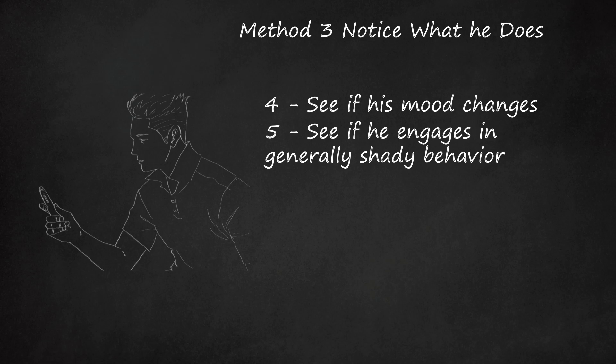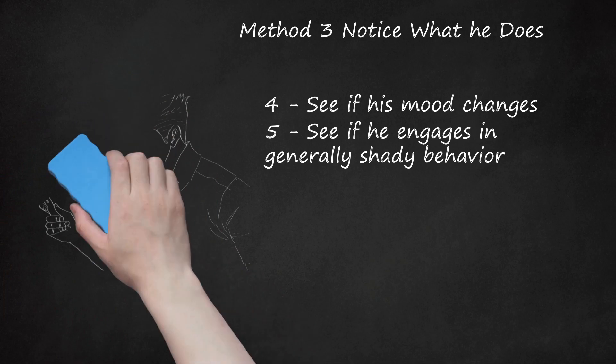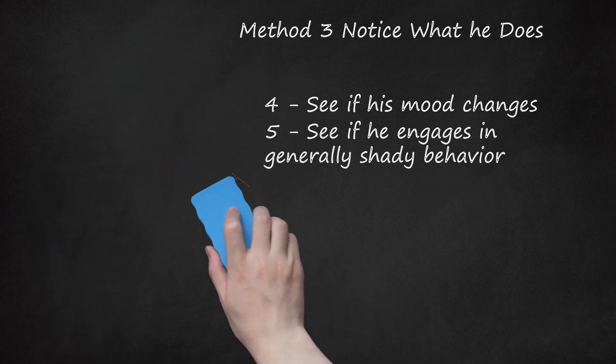If he disappears for hours, and is just incommunicado for a day, a night, or even a weekend. If he can't take the time to answer your call or just send you a quick message, then he may be with another girl. If he shuts his phone off for hours on end. Why else would he do that?